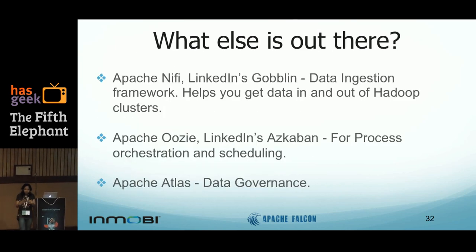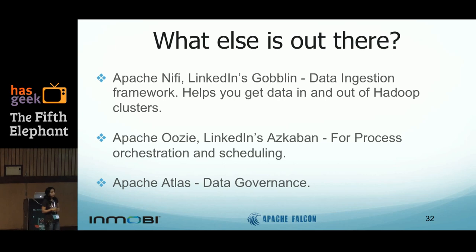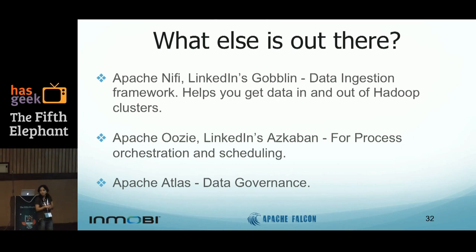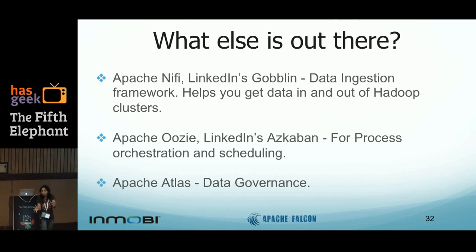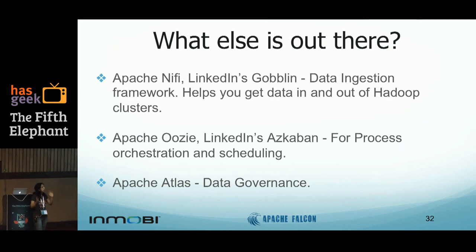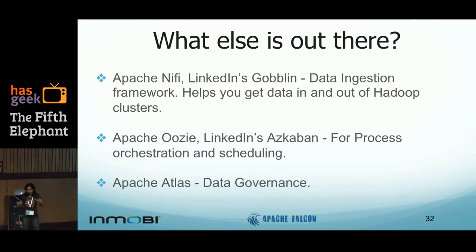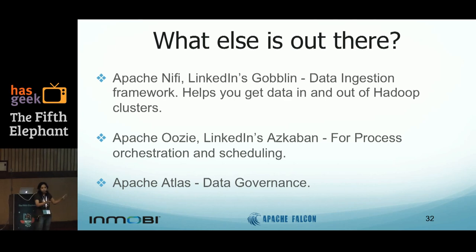When talking about Falcon you might ask what else is out there for comparison. On the ingestion and data management side there is Apache NiFi and LinkedIn's Goblin, both more focused on getting data into Hadoop. Then there is Apache Oozie and Azkaban for orchestration of processes — scheduling processes and building DAGs. And there is Atlas for data governance. They are all equally good in what they do, but to be fair there is not one product that does all of it — process management, data management, and data governance — all in one go like Falcon.